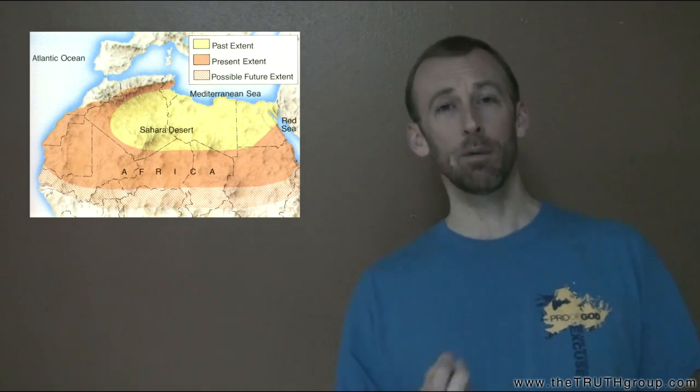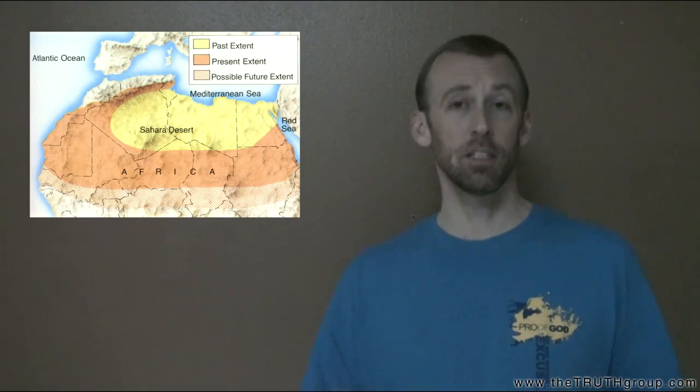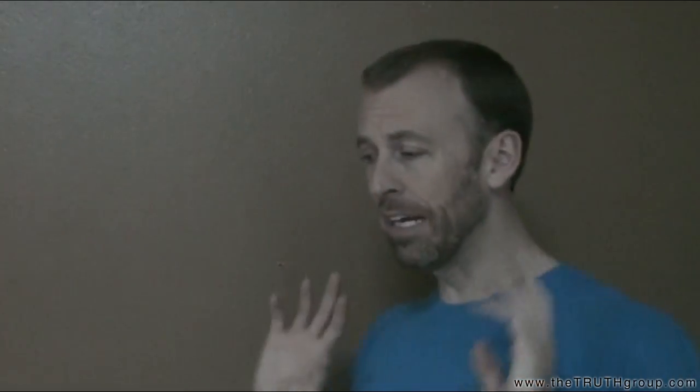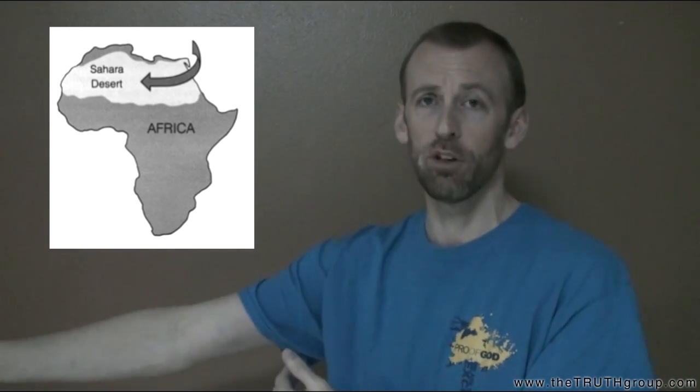There's a prevailing wind pattern that causes this. The process is called desertification, and the rate of increase is about 4 miles per year. So what this means is, the desert's big, the wind pretty much goes in the same direction all the time, and so every year it spreads the desert 4 miles further.